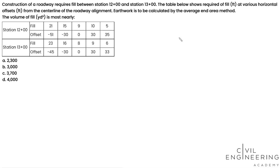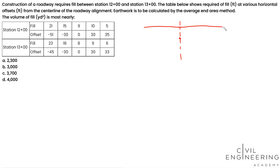Let's visualize this. At offset 0, this is the location at the center line. Let's draw the center line right here — this is your center line at offset 0. At this location, we need to fill by 9 feet to reach the finished surface of the roadway. This horizontal surface is your finished surface, and this vertical distance is 9 feet at the center line.